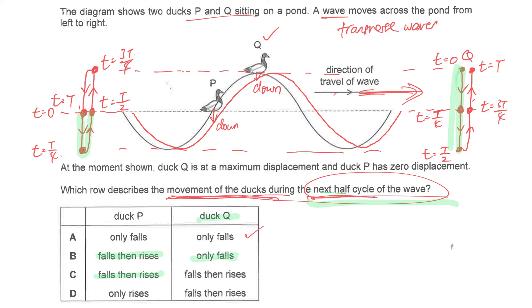So for P it will fall and then rise, but for Q it will only fall. Therefore B is the answer.